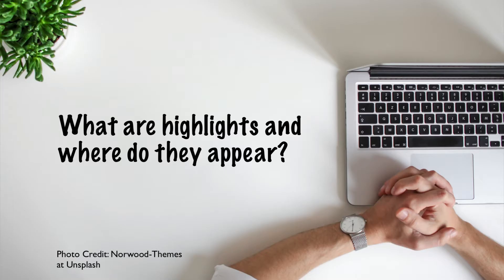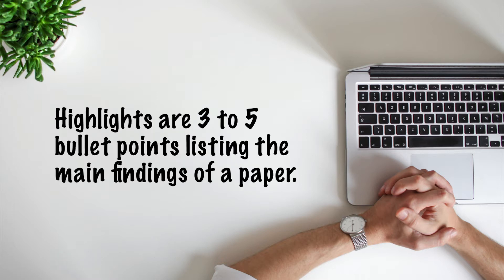What are highlights and where do they appear? Highlights are three to five bullet points listing the main findings of a paper. They may also mention new methods or special facilities used in the study. They are designed to attract readers to your paper.